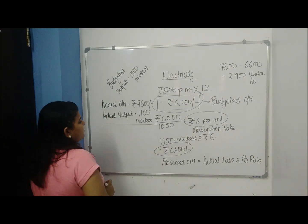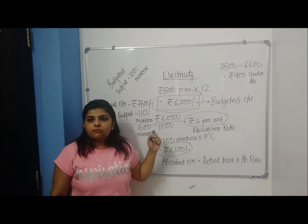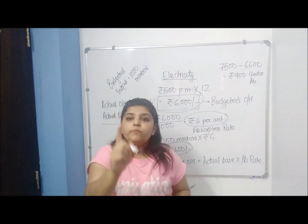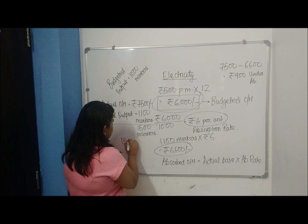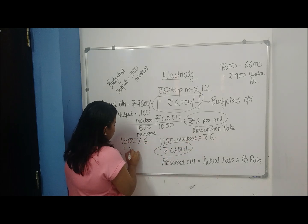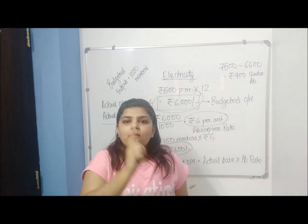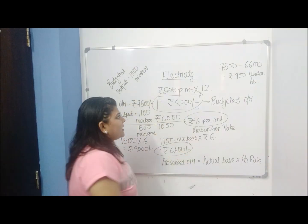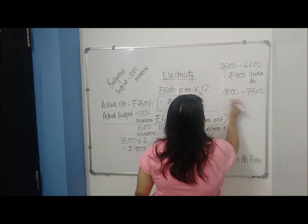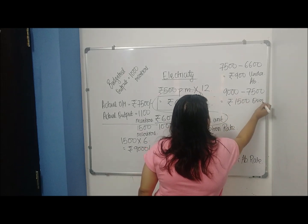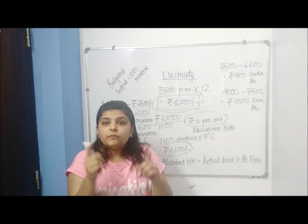Now let us take another example at the same point. Let us say my actual output is not 1100 markers but 1500 markers. If I produce 1500 markers, each one is tagged with rupees 6. So how much is coming back to my pocket? I am getting rupees 9000 — that is 1500 markers into the absorption rate of rupees 6. What is going out of my pocket is rupees 7500. So I absorbed more — rupees 9000 minus 7500 equals rupees 1500 over absorbed.